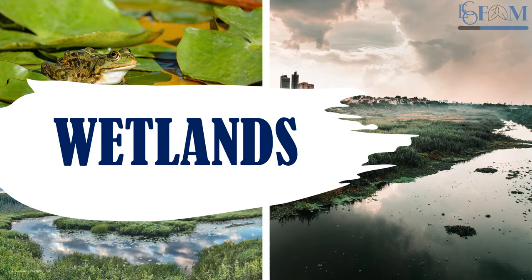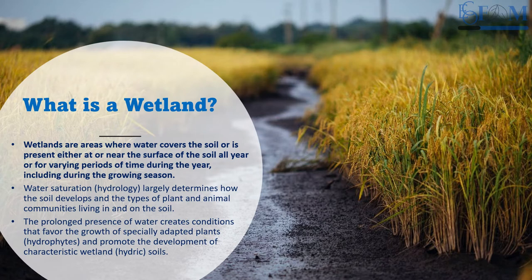Welcome, dear learners. Today we are going to discuss wetlands. Wetlands are areas where water covers the soil or is present either at or near the surface of the soil all year or for varying periods of time during the year, including during the growing season. Basically, wetlands are transition areas between dry uplands and aquatic systems — rivers, lakes, or oceans. To be considered a wetland, a region must have wet soil or be covered by a shallow layer of water for at least part of the year.